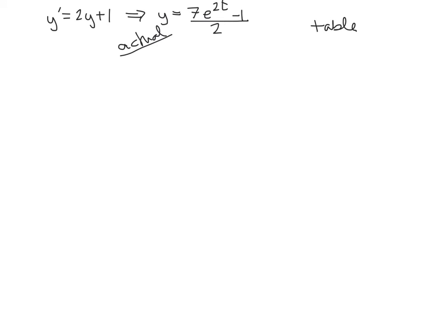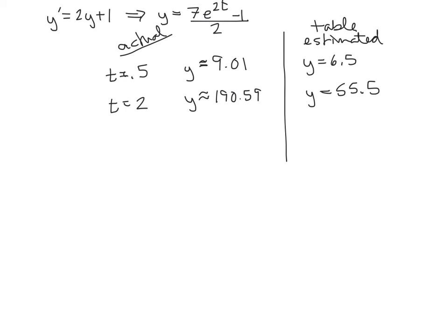I want to compare the actual y value to the values that we got from the table on the other side. So for some different values of t, when t is equal to 0.5, the actual y value from this equation is 9.01, and that's approximate, I plugged it into a calculator. But from the table, we get 6.5. And so this is the estimated value. The table is the estimated. So that's a pretty big error right there. But check out what happens at t equals 2. At t equals 2, the actual y value is approximately 190.59. But the estimated y value that we just got from the table is 55.5. I don't care what you're doing, that is horrible error right there.